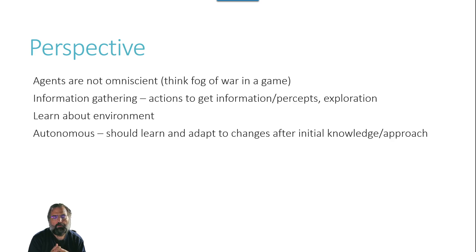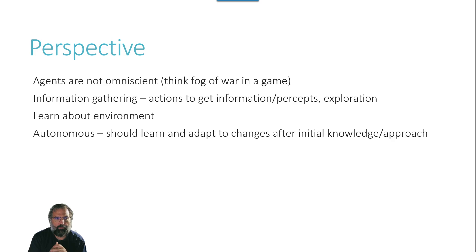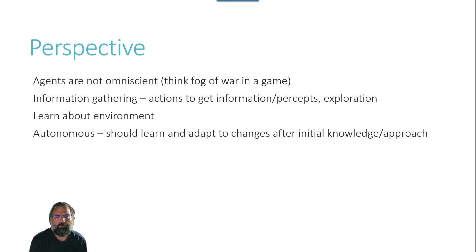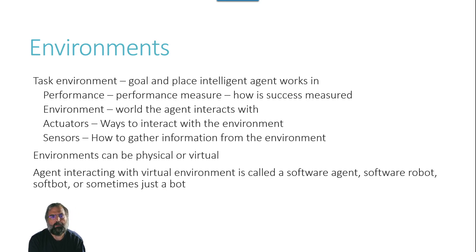Agents are not omniscient — they don't know everything. If you've played games with a fog-of-war concept where you can only see what is close to you or where you've been recently, the map doesn't display until you traverse it — it's that sort of concept. The agent doesn't have a full view onto the world; in fact, they may have a very biased view. They may also go out with the explicit intent of gathering information — actions performed to get information, not necessarily changing state, but maybe exploration. We like our agents to be autonomous, to learn, adapt, and change after some initial grounding. We like them to function on their own.